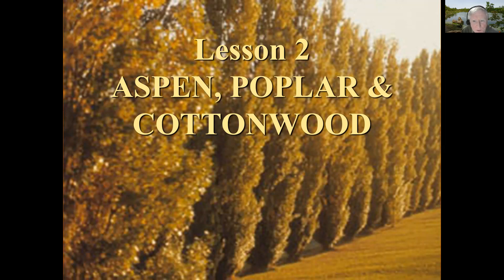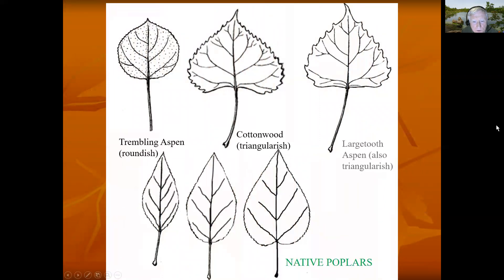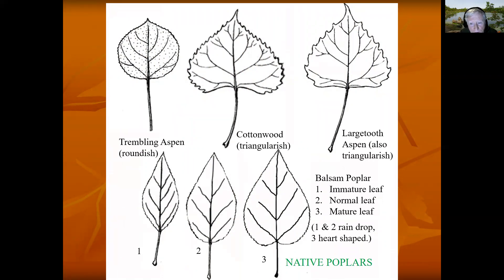Welcome to Lesson 2: Aspens, Poplars, and Cottonwood. Here are samples of the common poplars and cottonwoods. We have trembling aspen, which is roundish with small teeth; cottonwood, which is triangular-ish with medium-sized teeth; and large-toothed aspen, which is also somewhat like a triangle with much larger teeth. The balsam poplar has three different types of leaves on it. The most common one is number two, which looks like a raindrop.